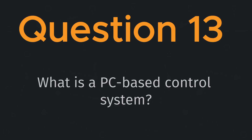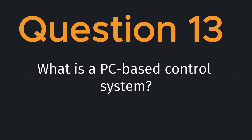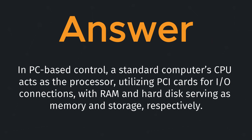Question thirteen: what is a PC-based control system? In PC-based control, a standard computer's CPU acts as the processor, utilizing PCI cards for I/O connections, with RAM and hard disk serving as memory and storage, respectively.